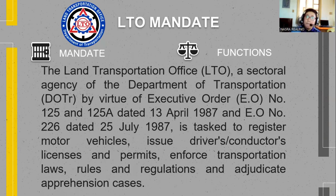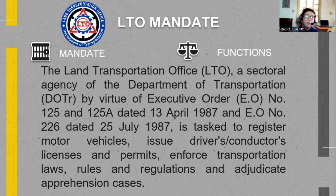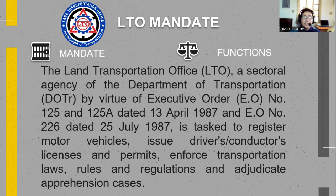Next I will compare BJMP to the mandate and function of LTO. The Land Transportation Office, a sectoral agency of the Department of Transportation (DOTR), by virtue of Executive Order No. 125 and 125A dated 13 April 1987, and EO No. 226 dated 25 July 1987, is tasked to register motor vehicles, issue driver or conductor's licenses and permits, enforce transportation laws, rules and regulations, and adjudicate apprehension cases. So LTO is also a law enforcement agency.